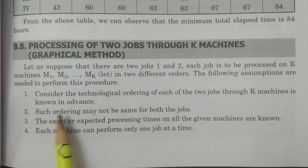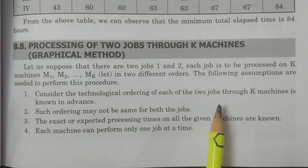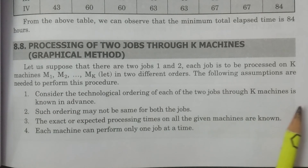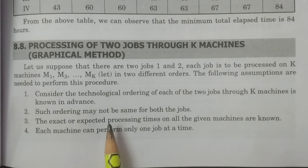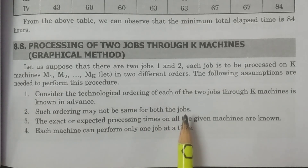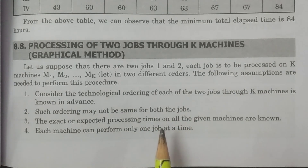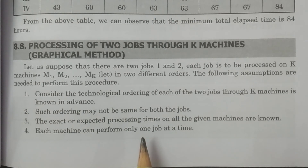The following assumptions are needed to apply this procedure. First, the technological ordering of each of the two jobs through K machines is known in advance — that is, prior to processing, we know the order.